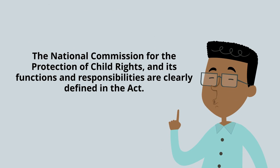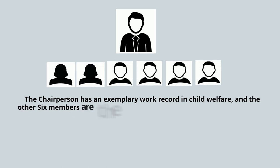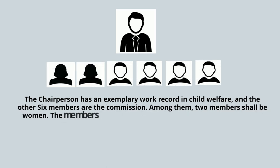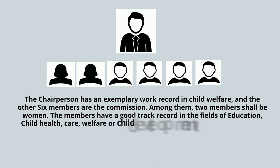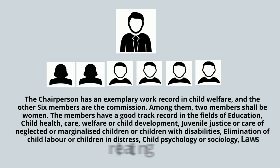The central government constitutes the National Commission for the Protection of Child Rights, and its functions and responsibilities are clearly defined in the Act. The Commission consists of a chairperson who should have an exemplary work record in child welfare, and six other members, among whom two shall be women. The members have a good track record in fields such as education, child health, care, welfare or child development, juvenile justice or care of neglected or marginalized children or children with disabilities, elimination of child labor or children in distress, child psychology or sociology, and laws relating to children.